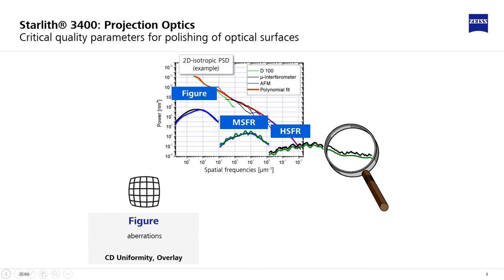Figure is assessed by full aperture interferometers, equipped with dedicated compensation optics to deal with the aspheric shape of the surfaces. These instruments yield 2D surface topography maps.